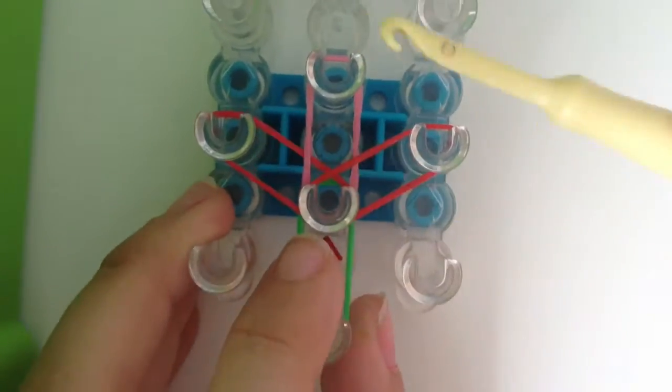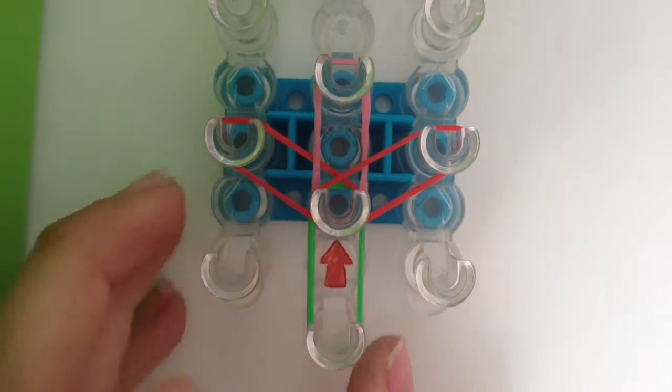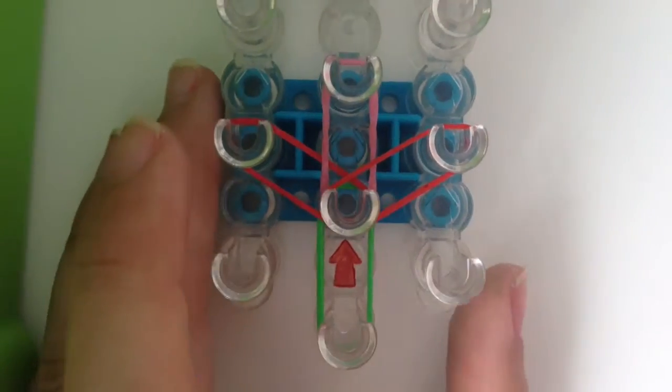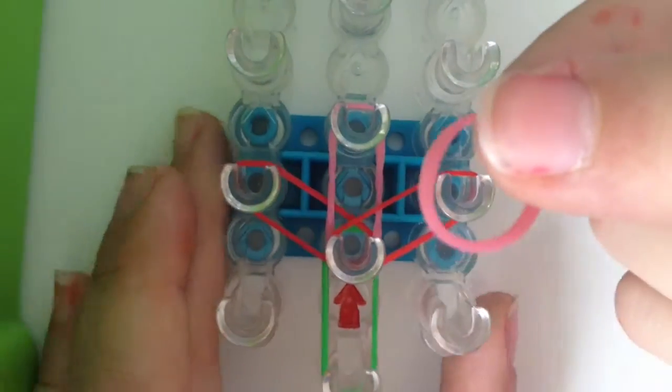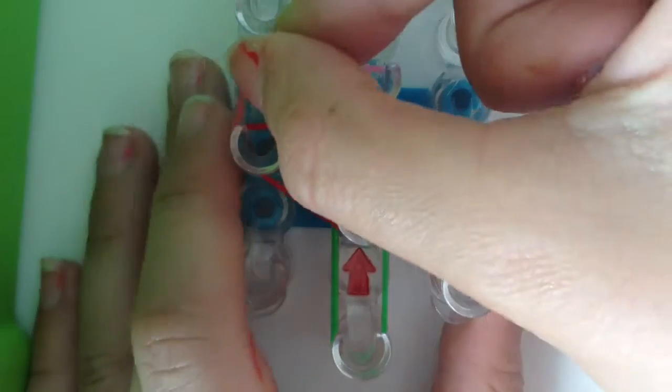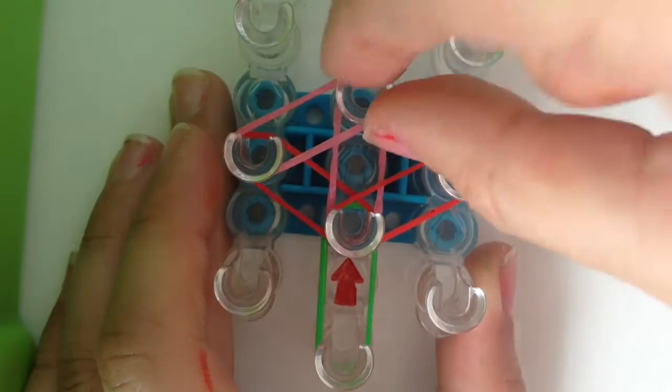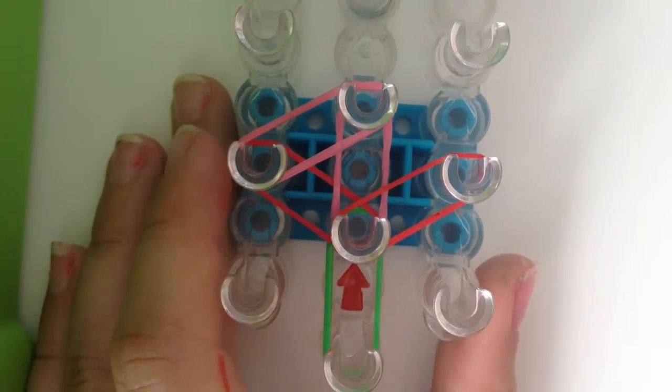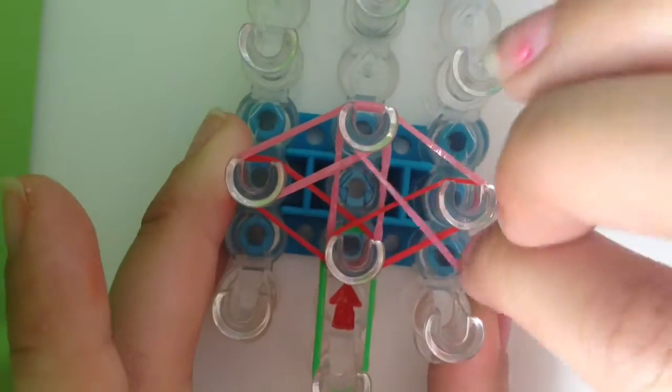You have to make sure you push all your bands down to ensure that all of them fit and not fly off. You will get another pink and place it from the second left peg going towards the middle and you do that on the right side.